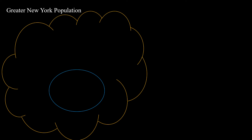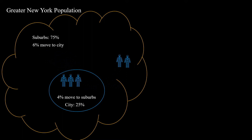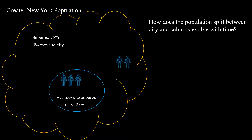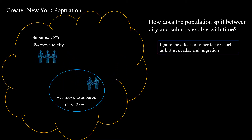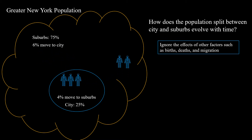Suppose at a certain time in the greater New York area, 25% of the population live in the city and 75% live in the suburbs. Each year, 4% of the people in the city move to the suburbs, and 6% of those in the suburbs move to the city.